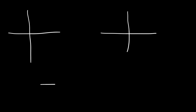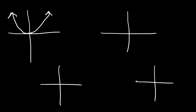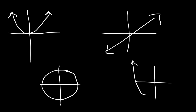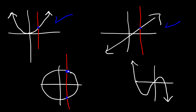Let's try some more examples. Drawing a vertical line for the first graph — it touches at one point, so it is a function. A linear graph also touches the vertical line at one point, so that's a function as well. A complete circle touches at two points, so a circle is not a function. For the last example, the vertical line touches at one point, so it is a function. That's a quick way to tell if something is a function or not.